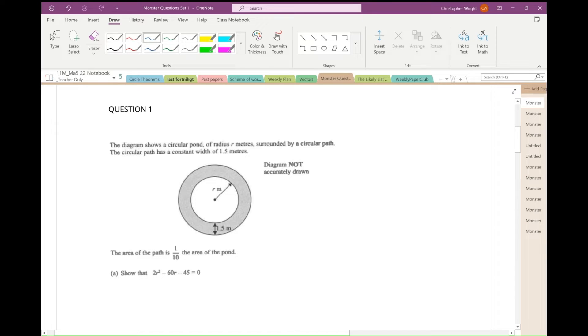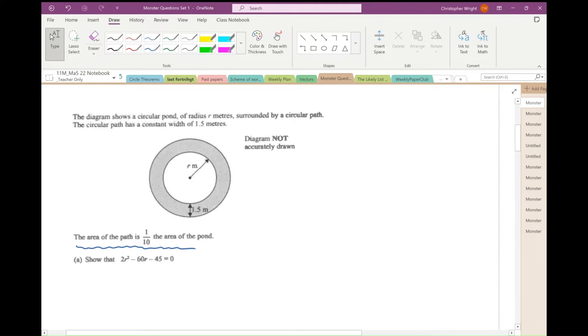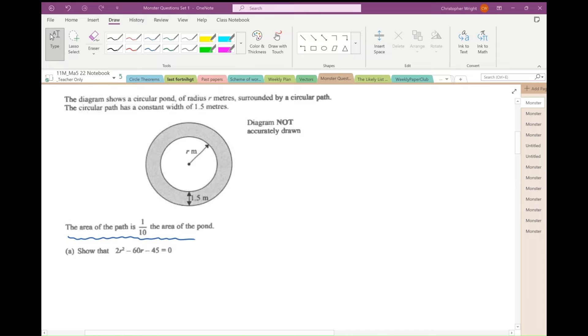Question one. I'm going to write an equation to reflect the fact that the area of the path is one-tenth of the area of the pond. So the area of the path is the area of the whole circle, which is pi times (r plus 1.5) squared minus the area of the pond, which is pi r squared, and that equals a tenth of the area of the pond. So there's an equation in r.